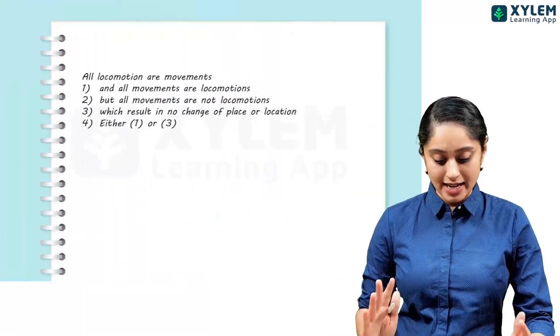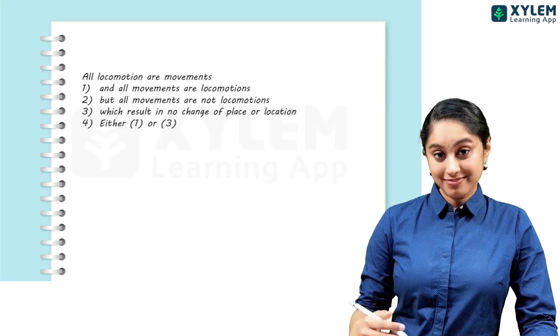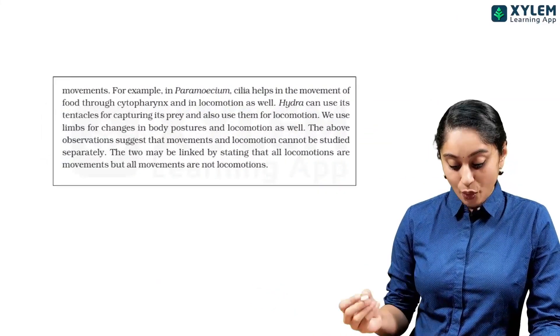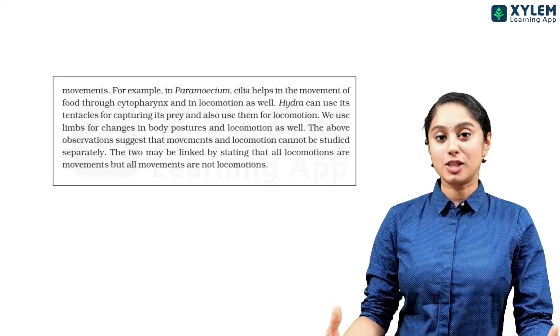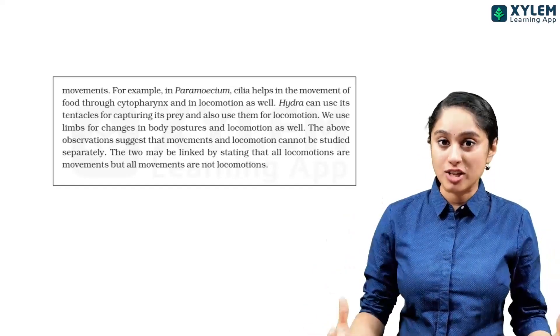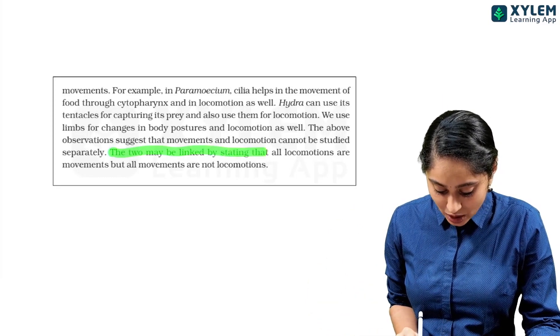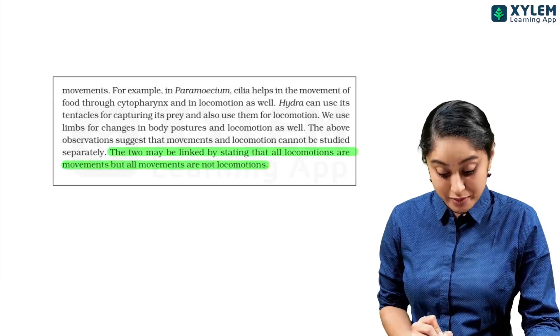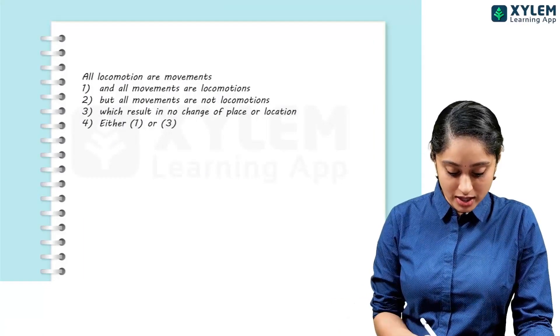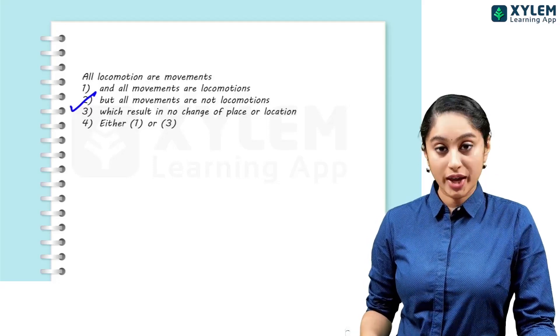What a question about this first type of movements. All locomotion are movements, but we need to fill it. Now, we know that locomotion is also using your limbs for changing the body posture, changing your location. So you can say that all locomotions are movements, but all movements are not locomotions. So the answer will be that not all movements are locomotion.